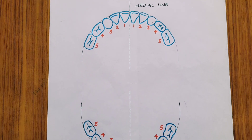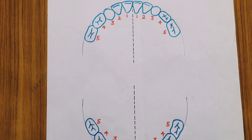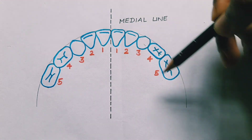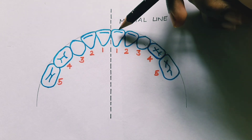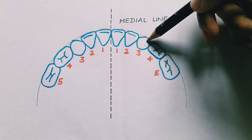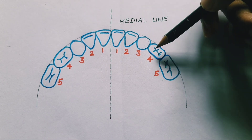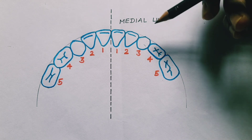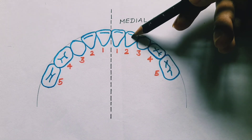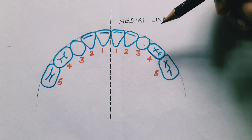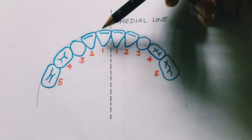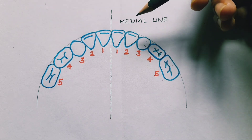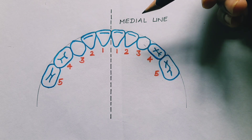Now let us discuss the dentition of the milk teeth or the primary teeth. If we divide the complete jaw in equal halves, we get two incisors, one canine, no premolars, and two molars. This makes up five teeth on one side of the upper jaw. The same is the case with the other half, so five and five gives us ten teeth in the upper jaw.